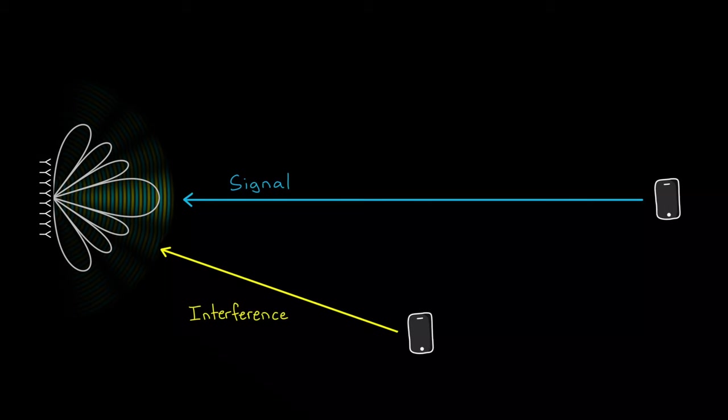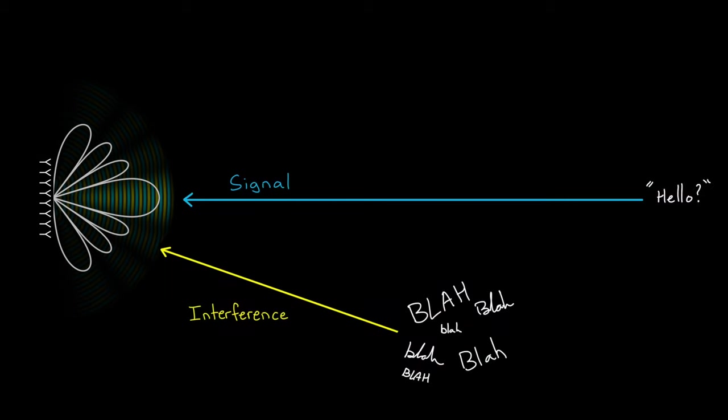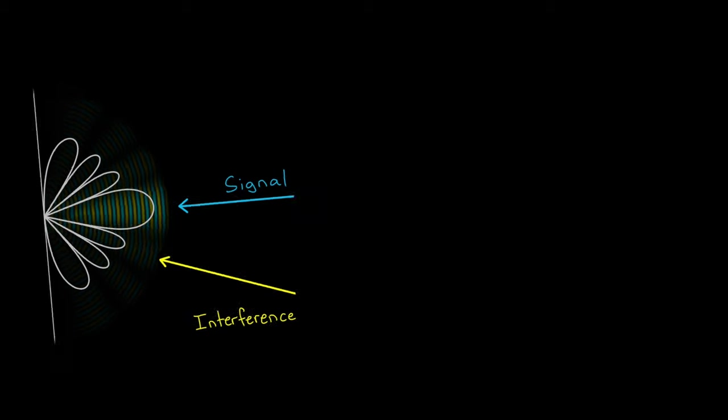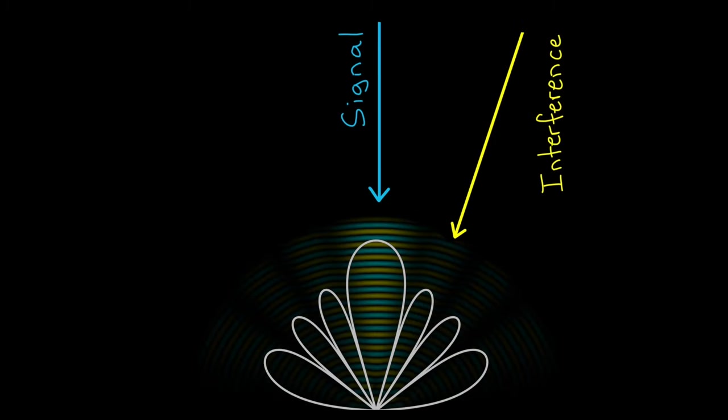Or even other devices that operate in nearby bands. Or with an array of microphones that are used to pick up sounds in one direction, interference can come from just other noises in the vicinity. Now regardless of the source, potentially we have signal in some direction that we want to maximize, and interference in others that we want to minimize.